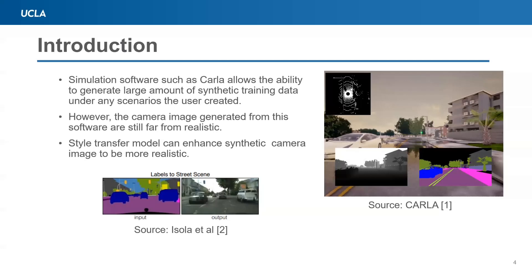It's more video game-like. So, in order to increase the quality of this simulated video camera, we can incorporate a style transfer model to add realism to it. This style transfer model can take in the segmentation mask generated from the simulation software and output the corresponding realistic camera image. This realistic version camera image can be used to augment the training data for the perception model.